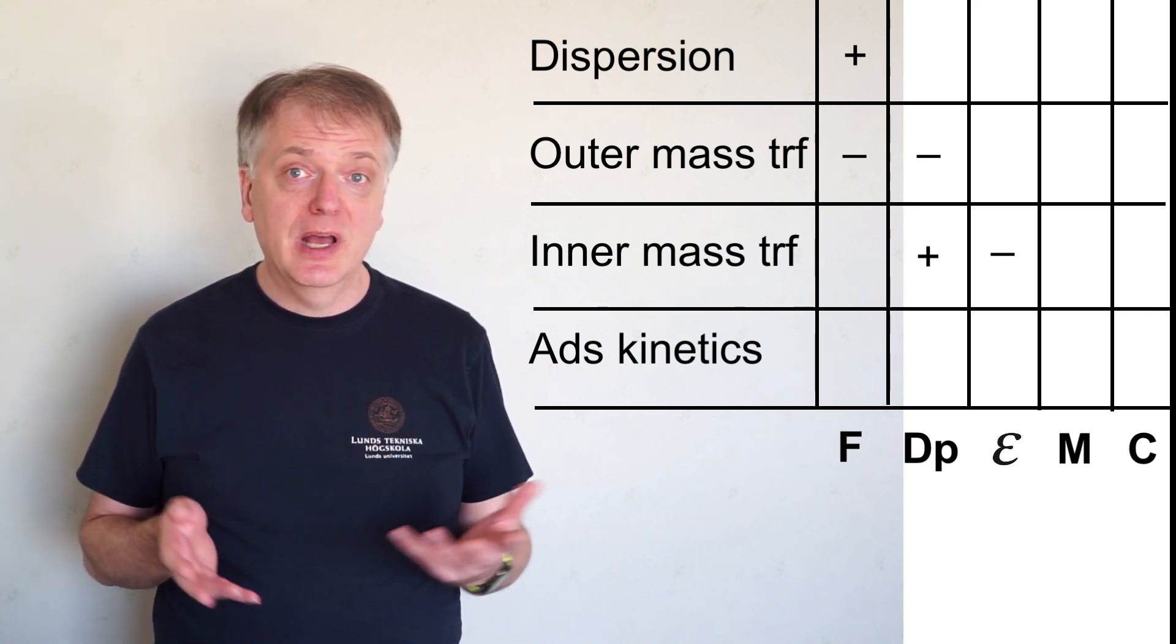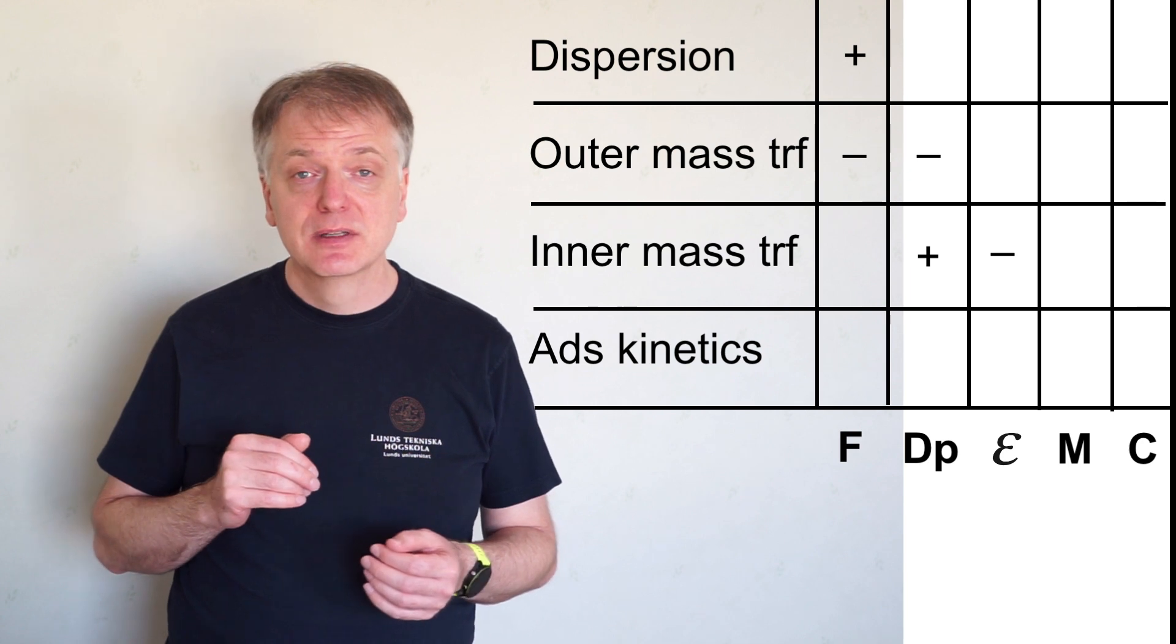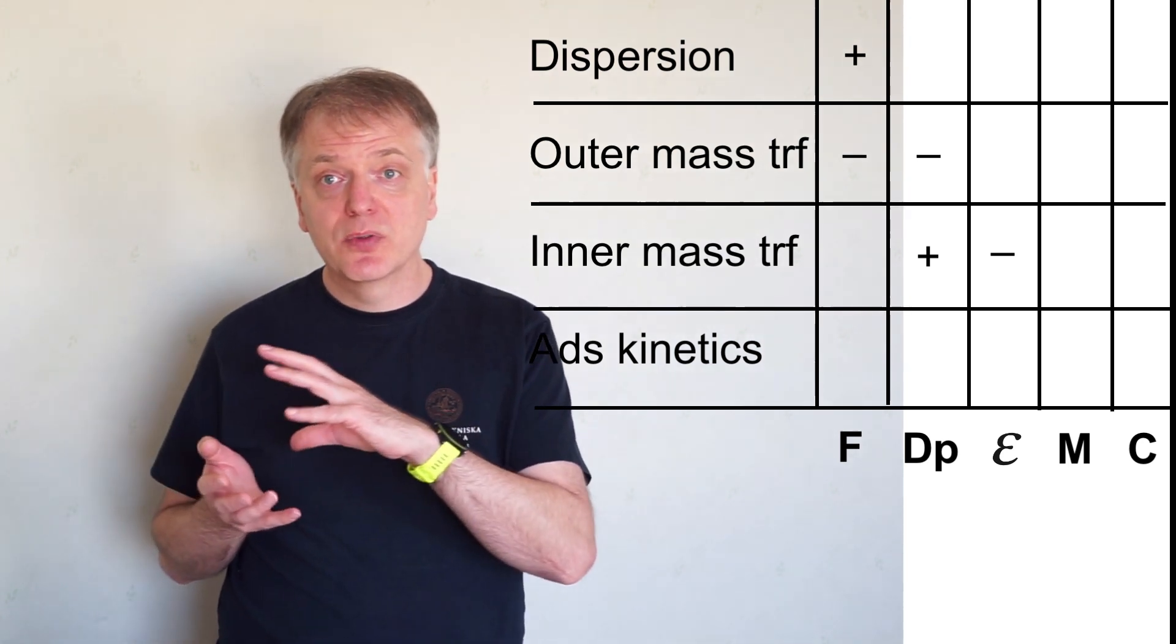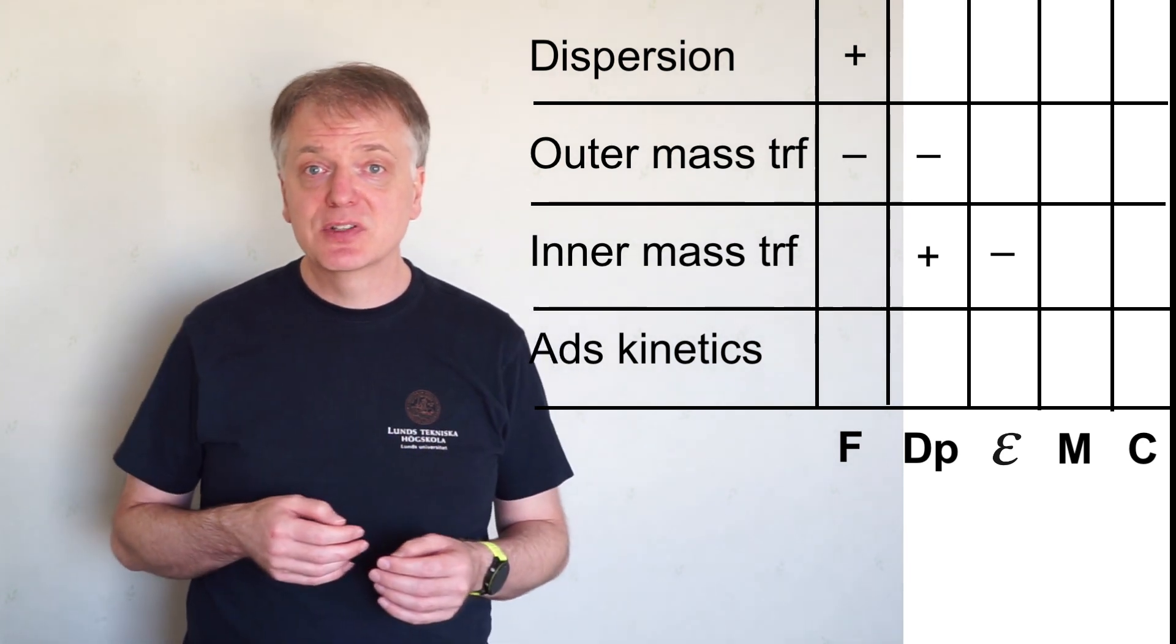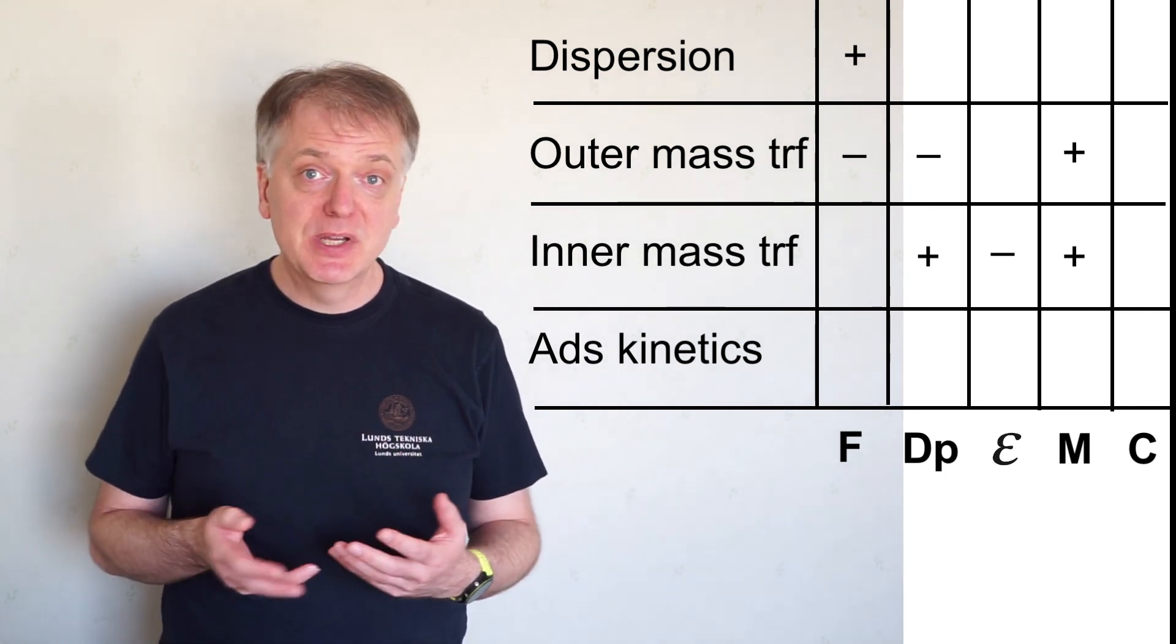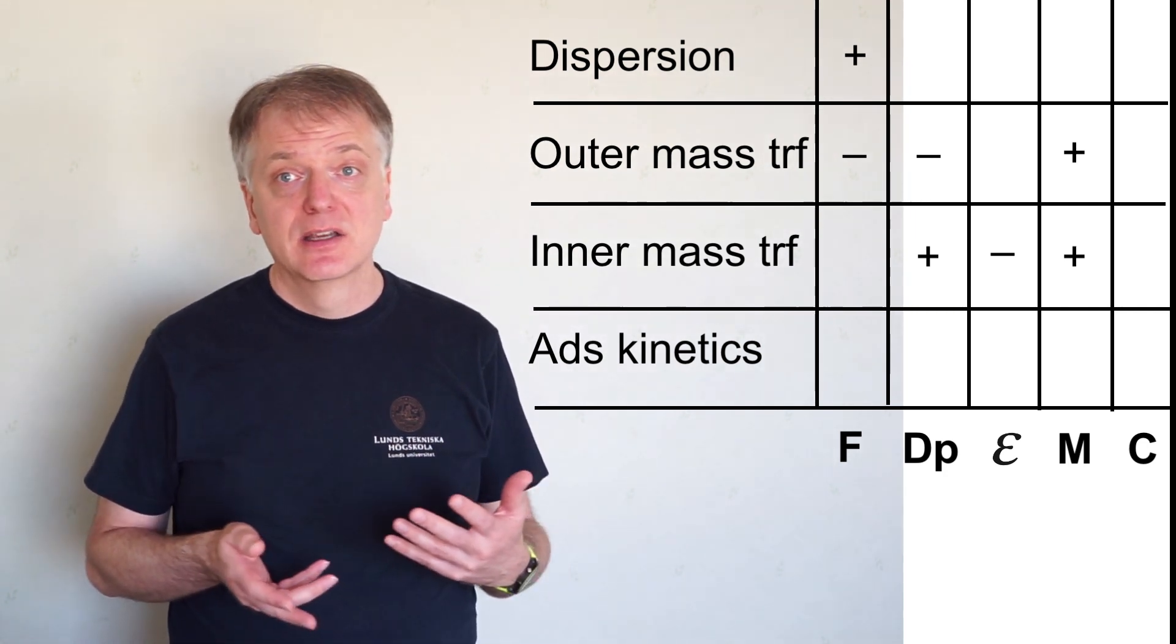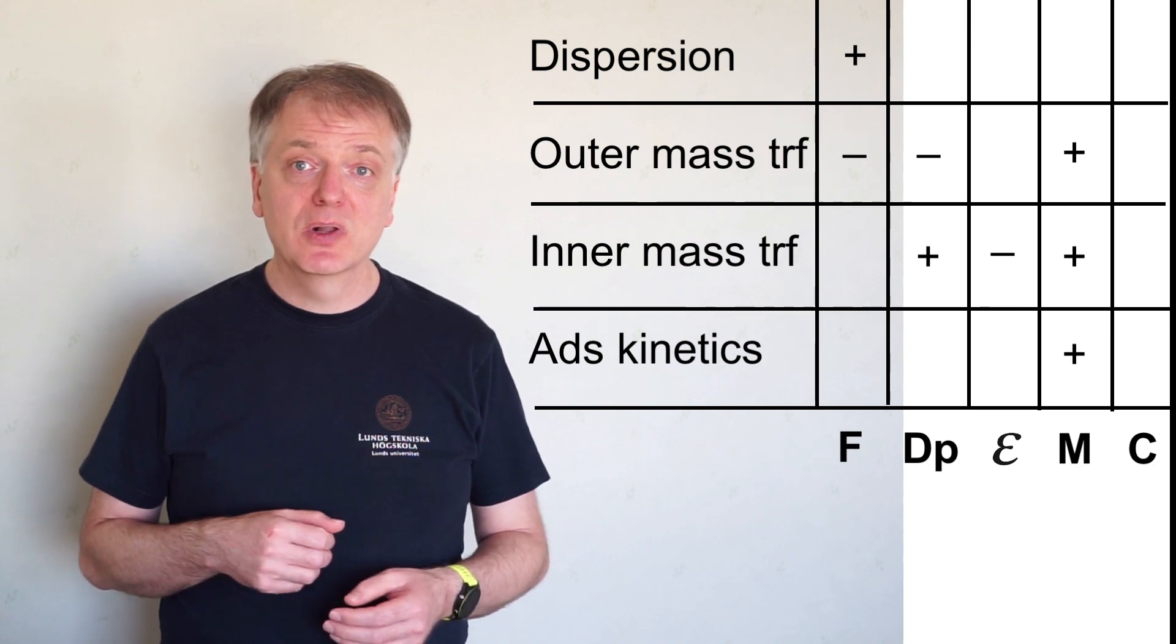A larger molecule has lower mass diffusivity. Thus broadening due to both outer and inner mass transfer resistance increases. For the same reason, adsorption kinetics are usually slower for larger molecules.